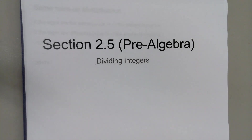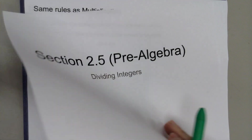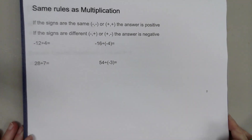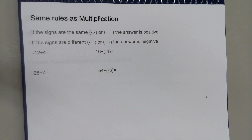Section 2.5 concerns dividing integers. It's the same exact rules as multiplication: if the signs are the same — both negative or both positive — the answer is positive. If the signs are different, then the answer is going to be negative.